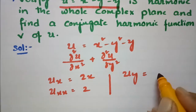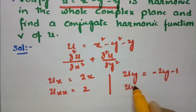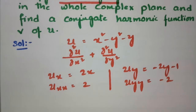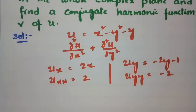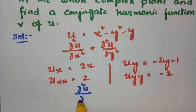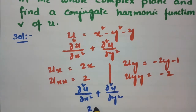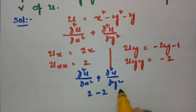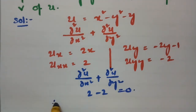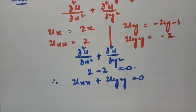If I take the derivative with respect to y, this will be -2y, and the -y term gives -1. So the double derivative with respect to y is -2. Now checking: ∂²u/∂x² + ∂²u/∂y² = 2 + (-2) = 0. Therefore u_xx + u_yy = 0, so u satisfies the Laplacian equation.